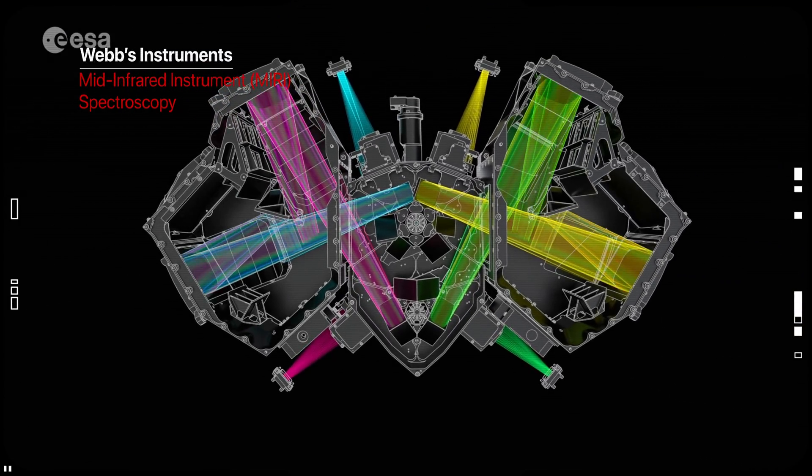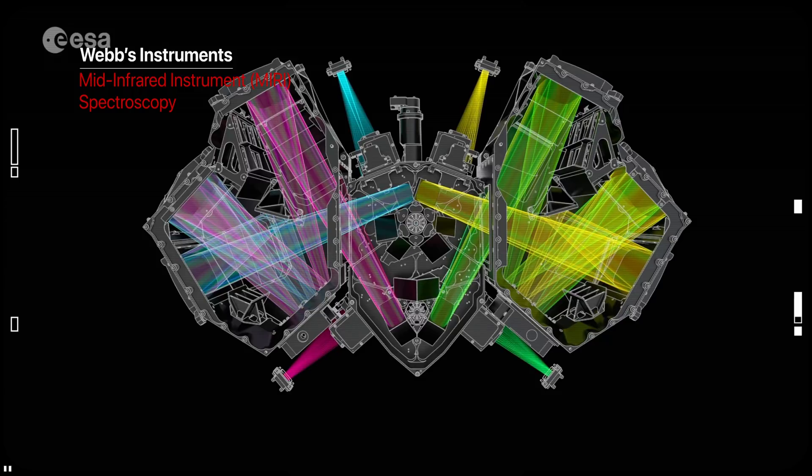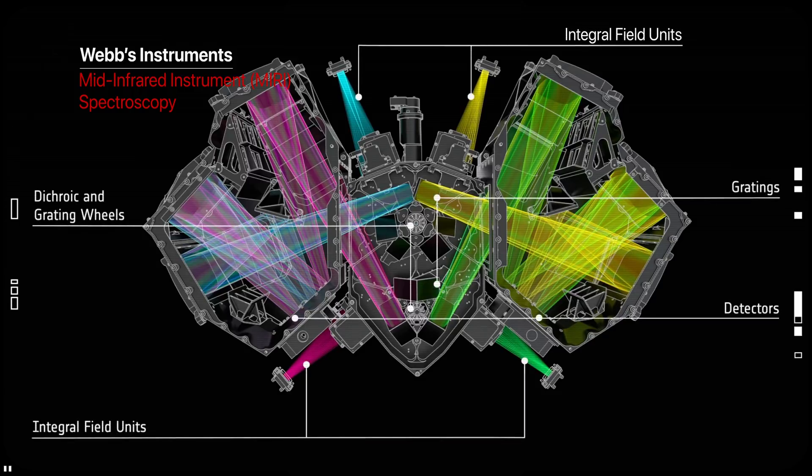As the only mid-infrared instrument, astronomers rely on MIRI to study red-shifted light of distant galaxies, including newly formed stars, faintly visible comets and objects in the Kuiper belt.